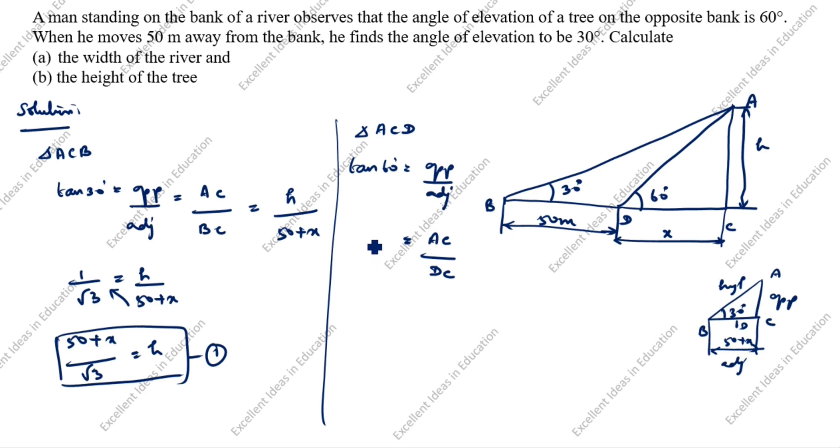What is tan 60 value? Root 3. Root 3 is equal to what is AC value? AC value is h, DC is x. Cross this one, root 3 times x is equal to h.